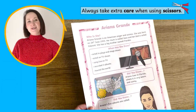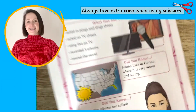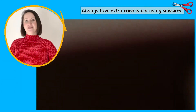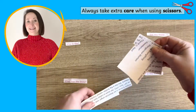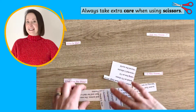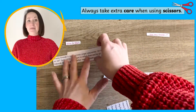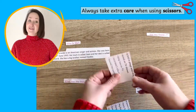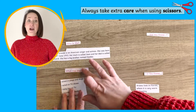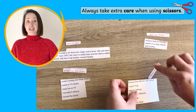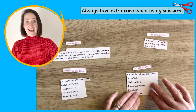You could use the FactFile to introduce children to subheadings. Why not cut it up, give children the subheadings, and then they've got to figure out which information goes where.